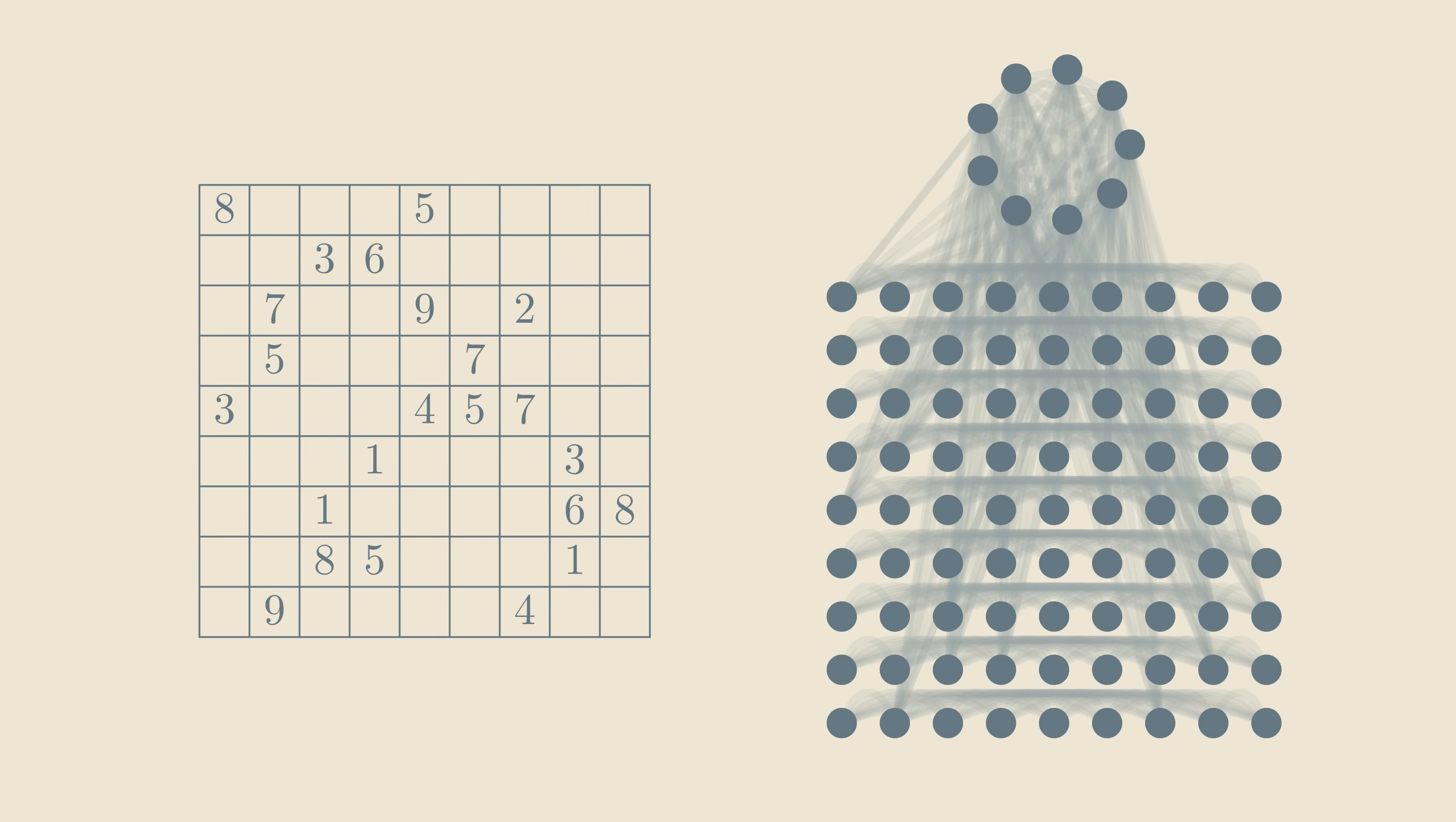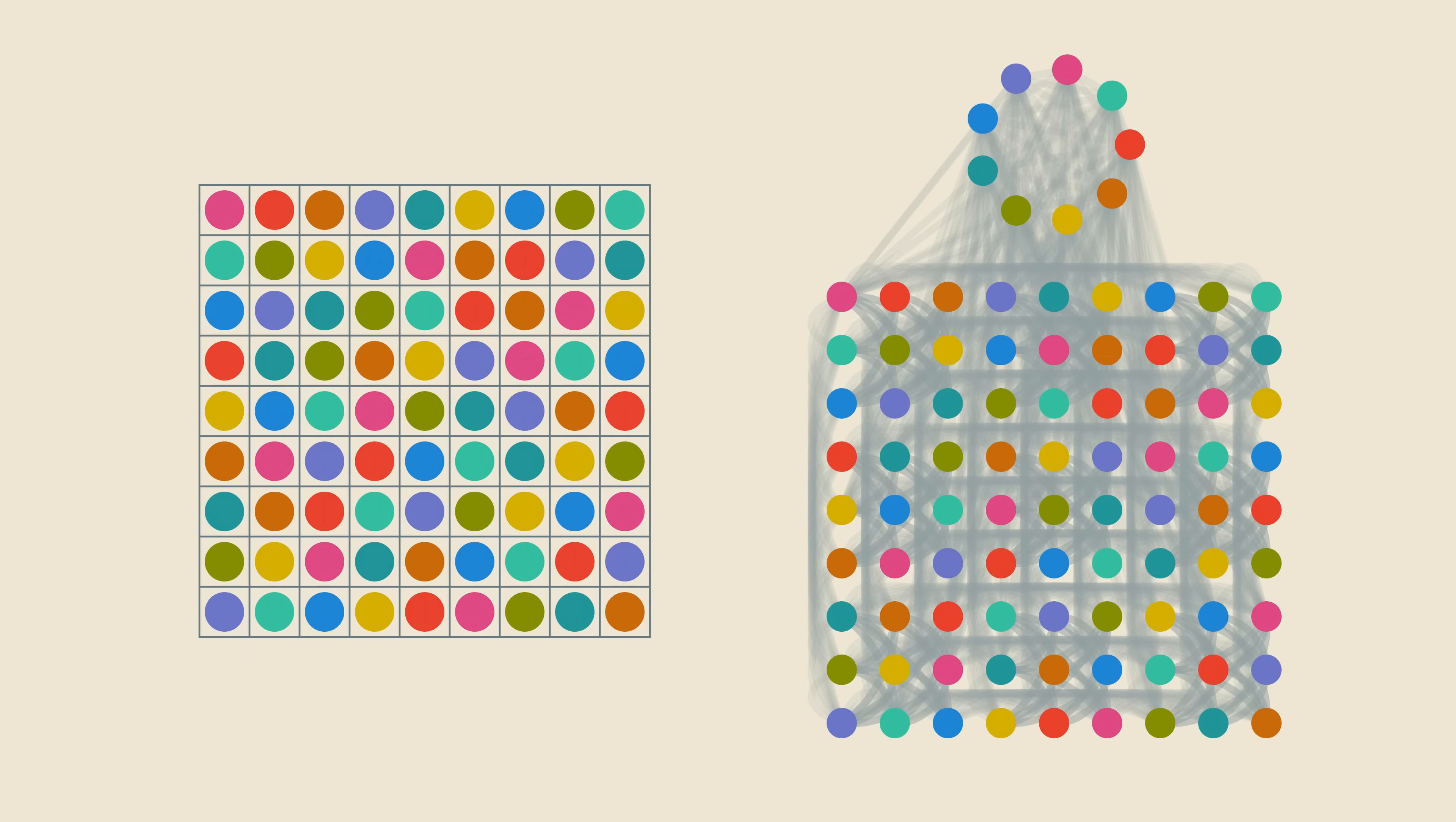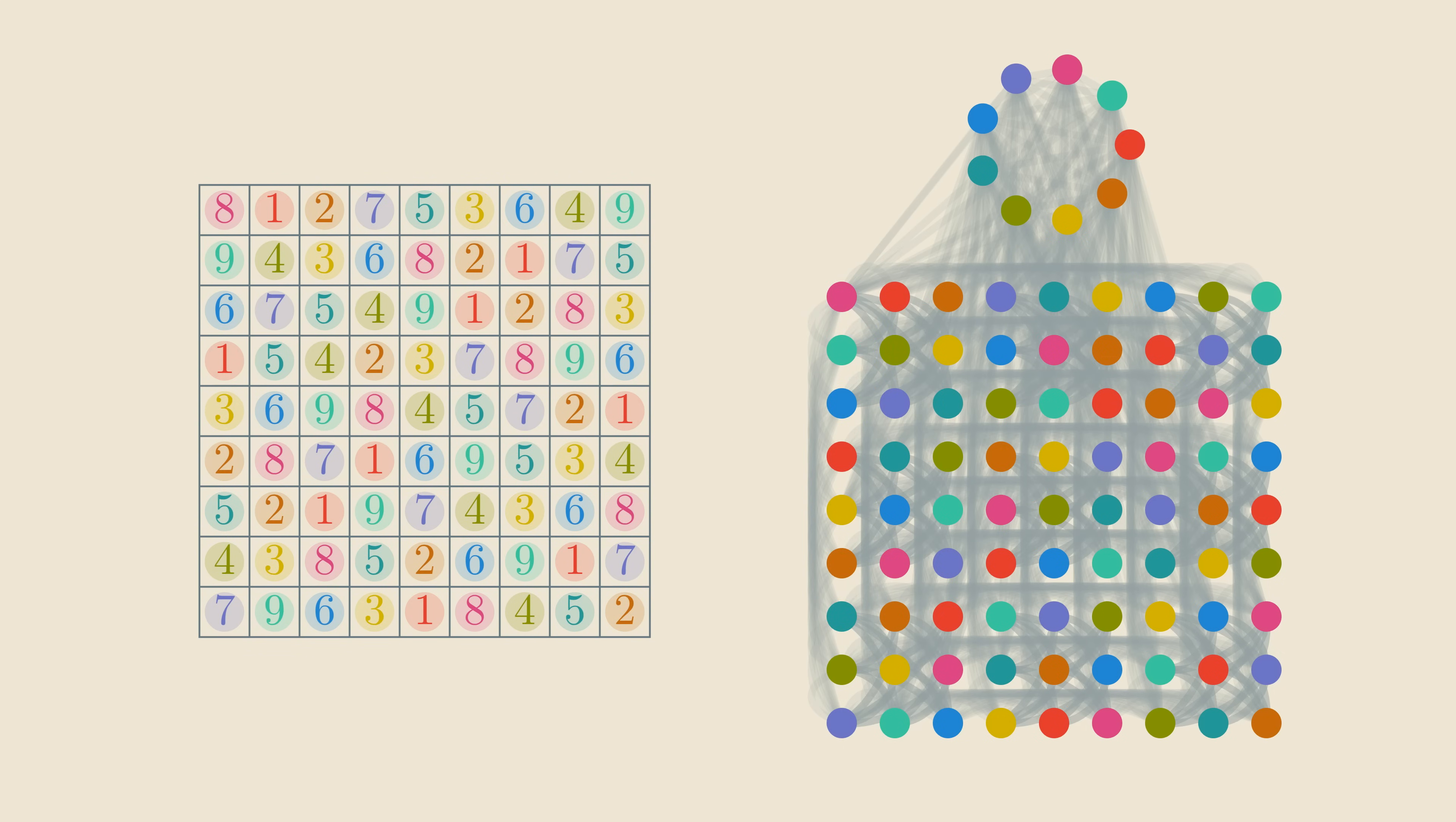And this is what the graph looks like when we include all the row constraints, column constraints and block constraints. Coloring the graph on the right now encodes the problem of solving the Sudoku on the left. And with that, we're finished. If I now want to prove to Vasek that I solved my Sudoku, I'll simply prove to him that I can color this graph.